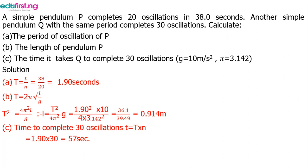For the time of oscillation to complete a given number of cycles, from period T equals t over n, making time the subject gives time equals period multiplied by n, which equals 57 seconds.